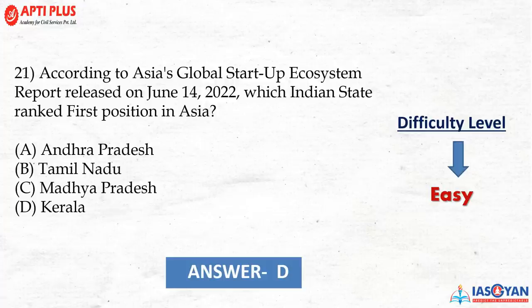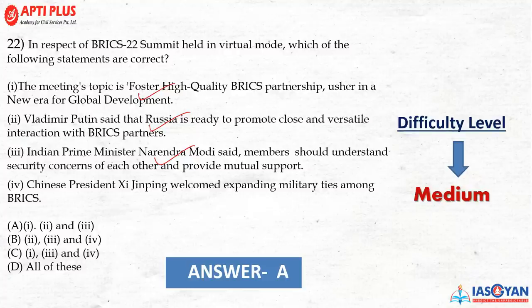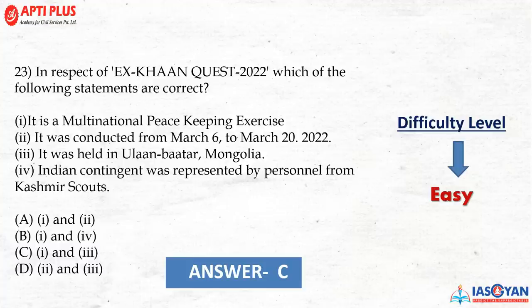Question 21: According to the Asia Global Startup Ecosystem Report released on June 14, 2022, which Indian state ranked first? The correct option is D — Kerala, an easy level question. Question 22: Regarding BRICS 2022 Summit held in virtual mode, the correct option is A — statements 1, 2, and 3 are correct. This is a current affairs question.